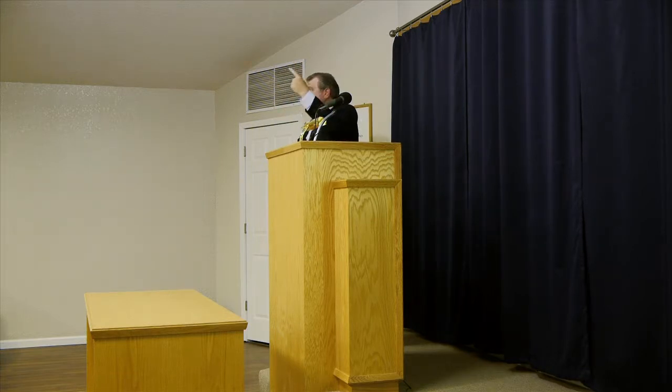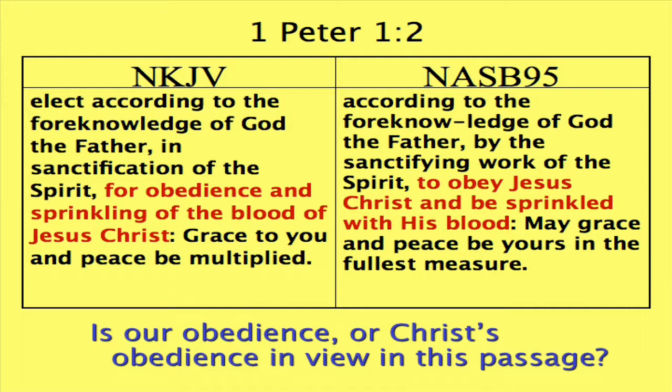This is where Paul makes a transition from the doctrinal to the practical part of Romans. Chapters 1 through 3: you're a sinner, you're doomed, all you deserve is death. Chapters 4 through 11: how God can and does justify the wicked through Jesus Christ. Therefore I beseech you brethren, by the mercies of God, that you present your bodies a living sacrifice, wholly acceptable to God, which is your reasonable service. Why is it reasonable? Because of what he wrote in the first 11 chapters.